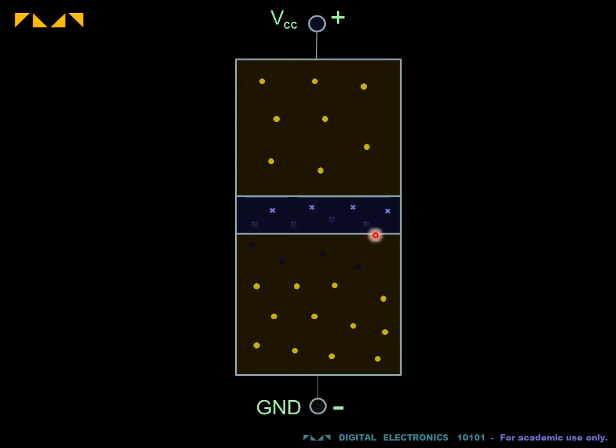Second, the electrons now stuck at the base of the junction produce an excess negative charge. The holes left behind in the emitter produce an excess positive charge. The net effect is a barrier voltage at the junction, which opposes the action of the external source. This further impedes the flow of electrons at the base.